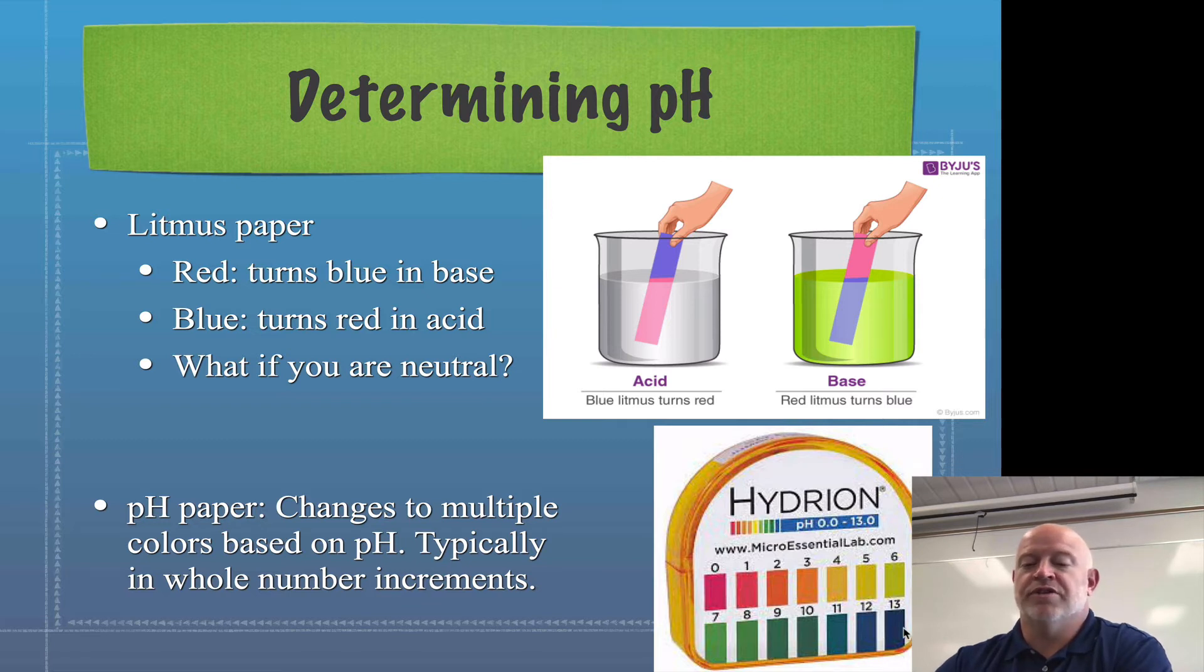What makes pH paper better is that it actually will change multiple colors, as you can see on the image over here, depending on the pH. So it'll give you this is a really dark blue, that's a 13. This orange is a 2. This kind of ugly yellow is a 5 and so forth.